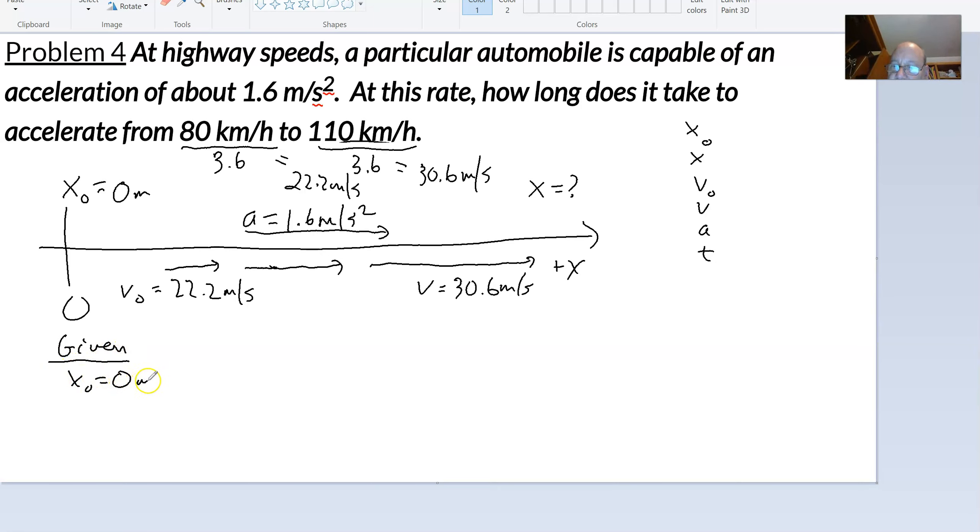x₀ equals 0 meters. I don't need to write down unknown information. My initial velocity is 22.2 meters per second. My final velocity is 30.6 meters per second. And my acceleration is 1.6 meters per second squared. And then I've been told that I need time. How long does it take for this acceleration to occur?